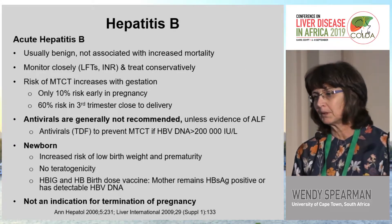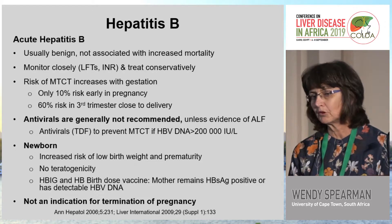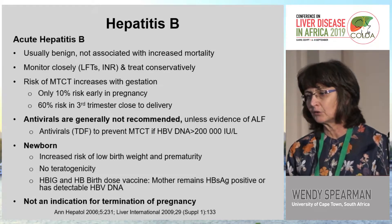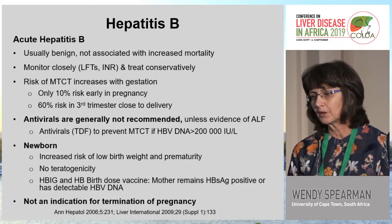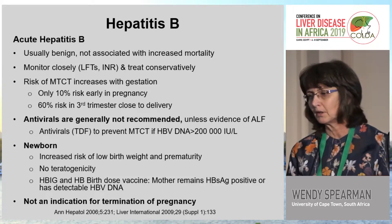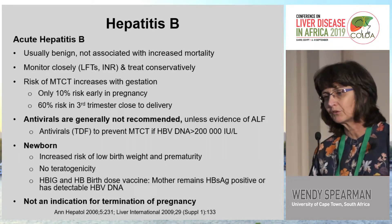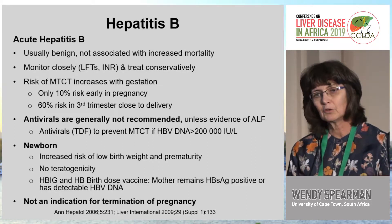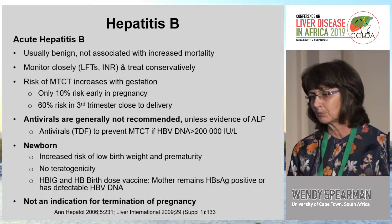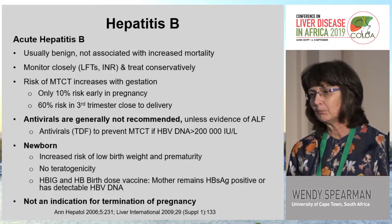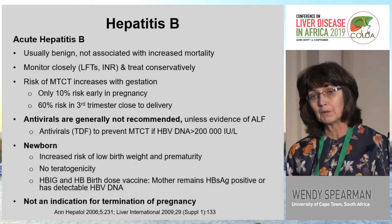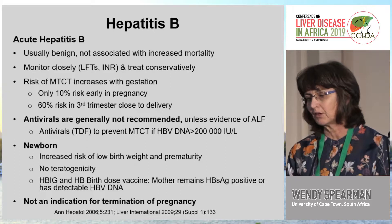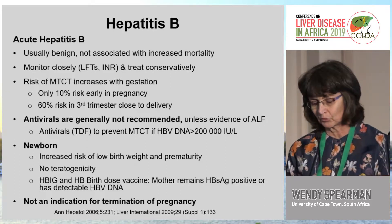Looking briefly at acute hepatitis B — this is usually benign, not associated with increased mortality. We need to monitor closely with LFTs, INR, and treat conservatively. The risk of mother-to-child transmission increases with gestation: only 10% in early pregnancy, rising to 60% in the third trimester, particularly close to delivery. Antivirals are not generally recommended unless there is acute liver failure, but the need to prevent mother-to-child transmission must be assessed. In terms of the newborn, there is an increased risk of low birth weight and prematurity, but no teratogenicity. If the mother remains surface antigen positive or has detectable DNA near delivery, the baby must receive the birth dose vaccine and, if possible, HBIG. This is not an indication for termination of pregnancy.